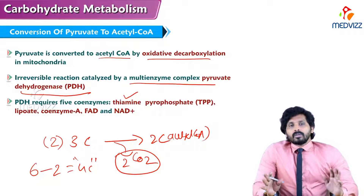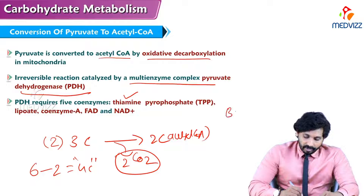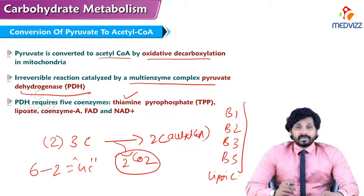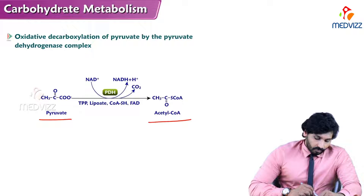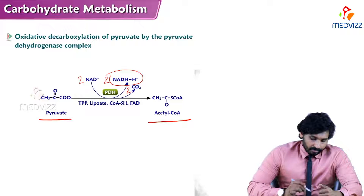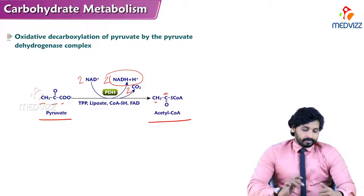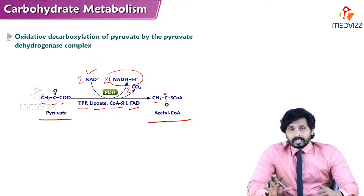Pyruvate dehydrogenase requires five coenzymes: thiamine (vitamin B1), FAD (B2), NAD (B3), coenzyme A (B5), and lipoic acid. All five coenzymes are required for the activity of pyruvate dehydrogenase. In the reaction, pyruvate is converted to acetyl-CoA with production of reducing equivalents — NAD is converted to NADH + H⁺. Two CO2 molecules are removed, and acetyl-CoA carries two carbons. The coenzymes involved are thiamine pyrophosphate, lipoate, CoA-SH, FAD, and NAD.